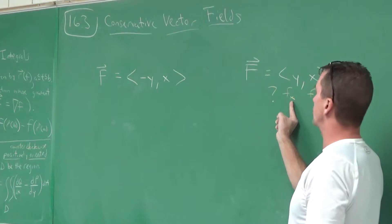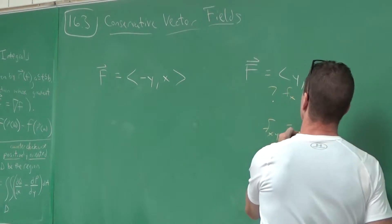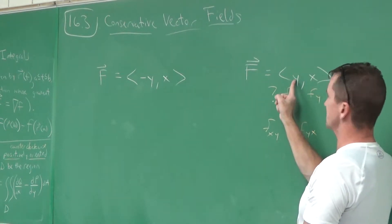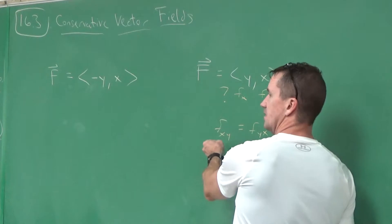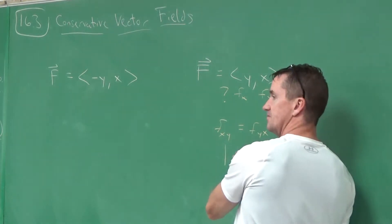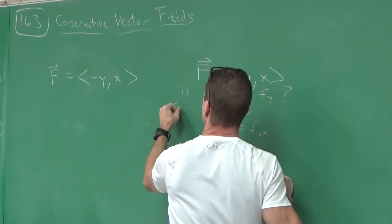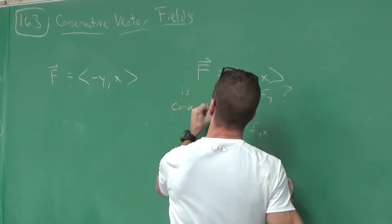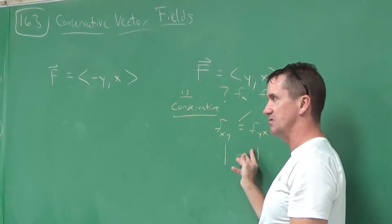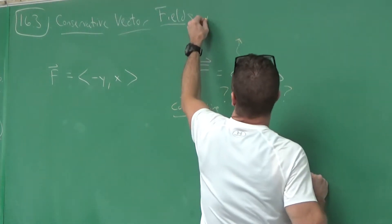Does fxy equal fyx? That's the question. What's the derivative of the x-component with respect to y? And what's the derivative of the y-component with respect to x? If they're equal — by Clairaut's theorem — then the vector field is conservative.